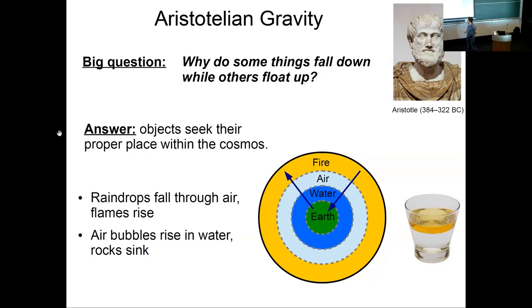This does explain phenomena that you can see every day fairly well. Raindrops fall. Raindrops find themselves in air. They need to be closer to the center of the cosmos, and so they fall down. Air bubbles, for example, rise in water while rocks, which are presumably made primarily of Earth, sink.